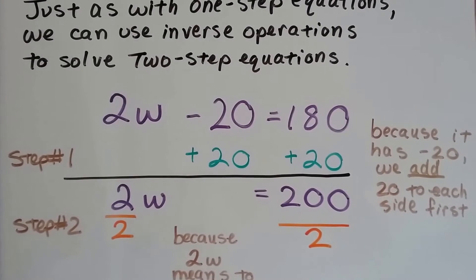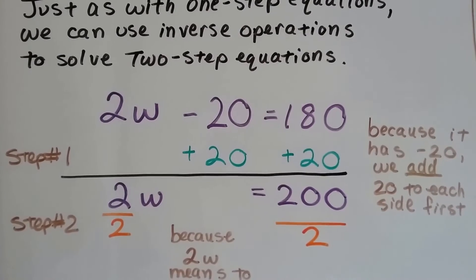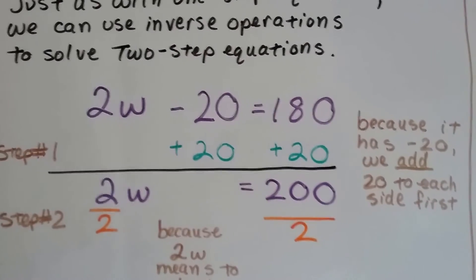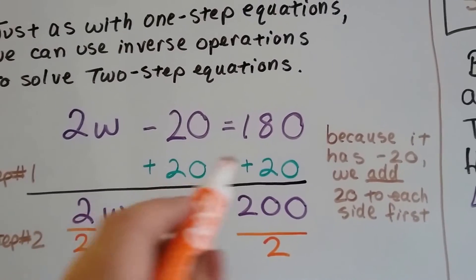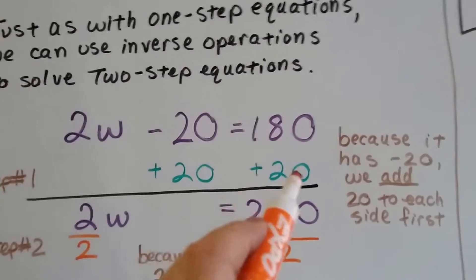With 2w minus 20 equals 180, we see the minus 20, so we add 20 to each side. That's the first thing we do.